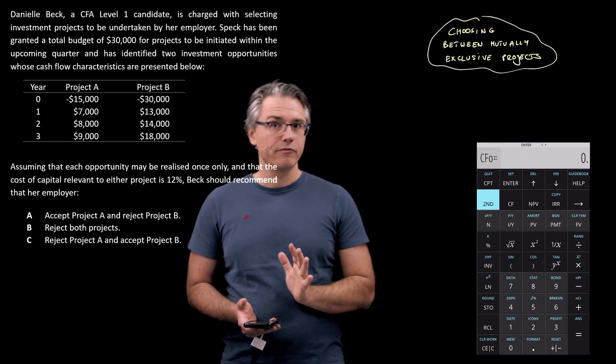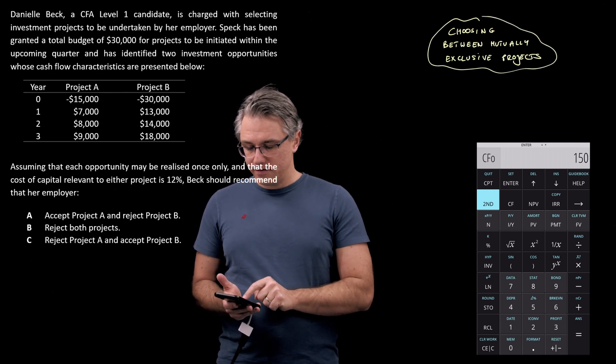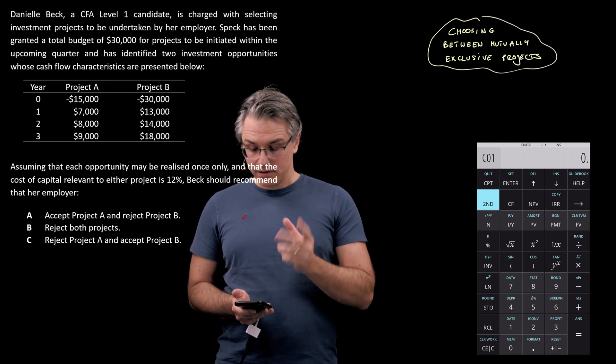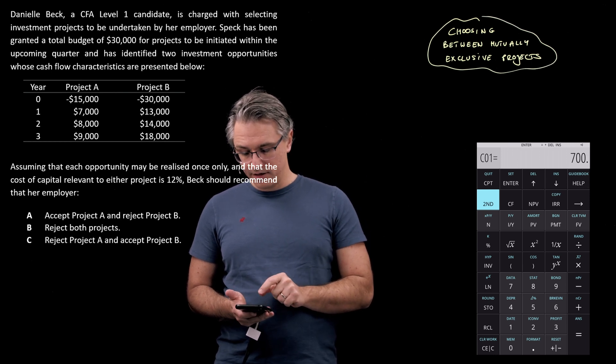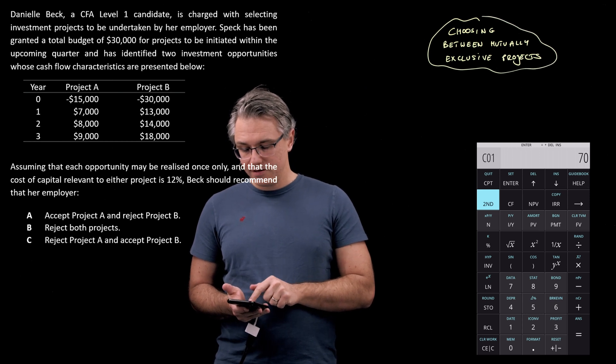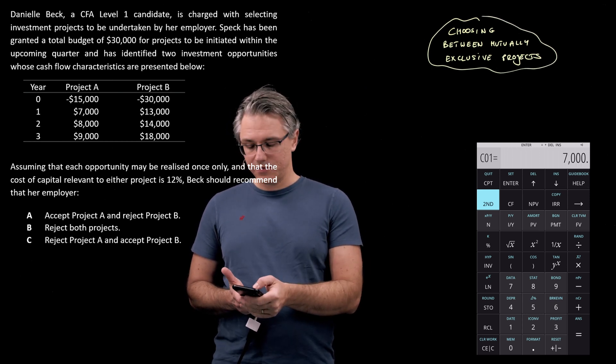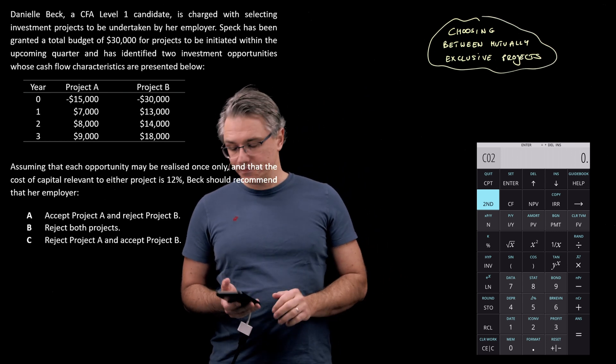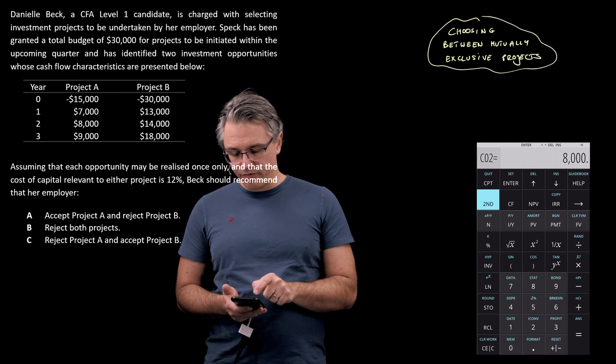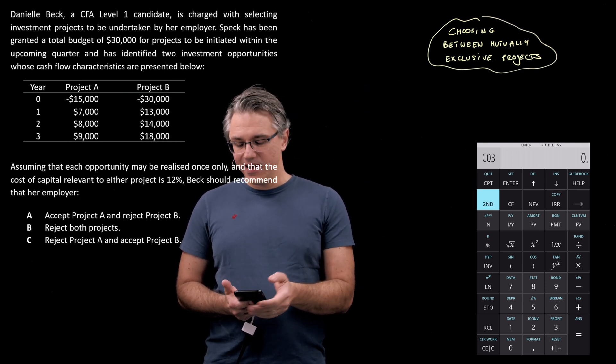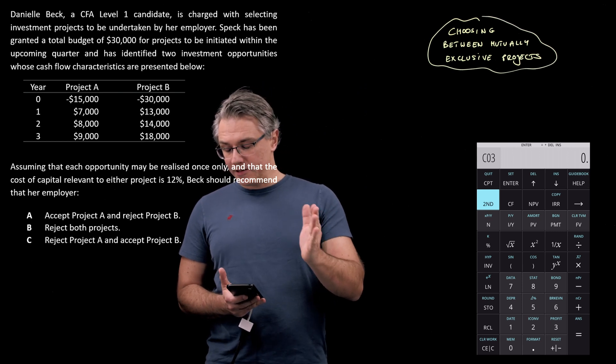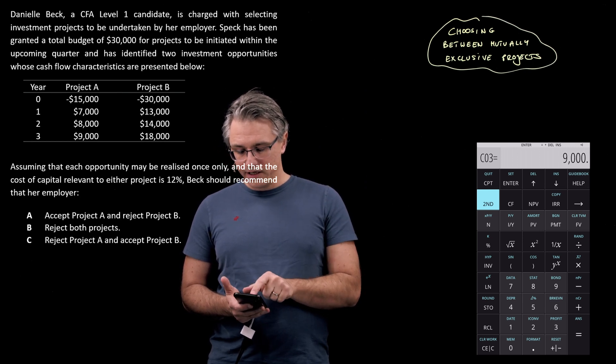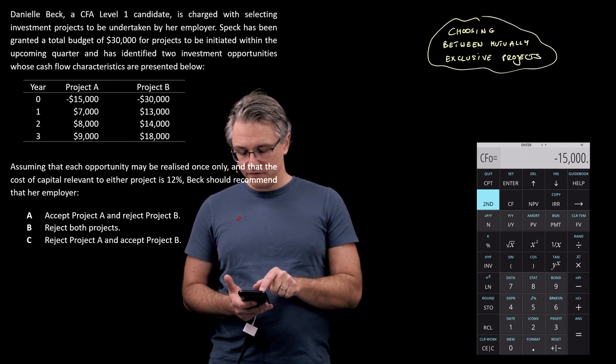As you can see it's now zeroed out and I'm starting with Project A. So inputting 15,000 negative followed by enter as the CF0, down arrow once, then I've got 7,000—sorry I did 700 there, so I can easily overwrite this—7,000 enter, that's accepted as C01. Press the down arrow twice, omit the frequencies input. I don't think you're really going to use it that much in the CFA exam. I've never used it to be honest when I took the exam. I've done my CO2 input, and now the final one is going to be 9,000 followed by enter. Just quickly review what we've done here: 7, yes, 15 seems good.